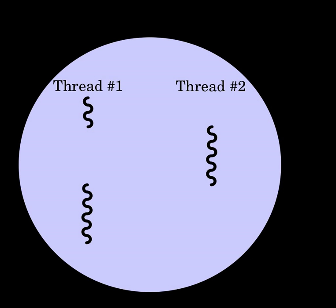If a user thread or fiber performs a system call that blocks, the other user threads and fibers in the process are unable to run until the system call returns. A typical example is when performing I/O — most programs are written to perform I/O synchronously. When an I/O operation is initiated, a system call is made and does not return until the I/O operation has been completed. In the intervening period, the entire process is blocked by the kernel and cannot run, which starves other user threads and fibers in the same process from executing. A common solution is providing an I/O API that implements a synchronous interface by using non-blocking I/O internally, and scheduling another user thread or fiber while the I/O operation is in progress. Similar solutions can be provided for other blocking system calls. Alternatively, the program can be written to avoid the use of synchronous I/O or other blocking system calls.